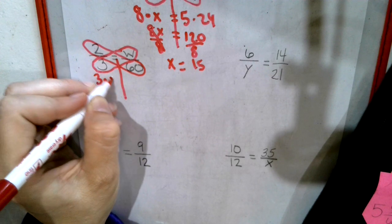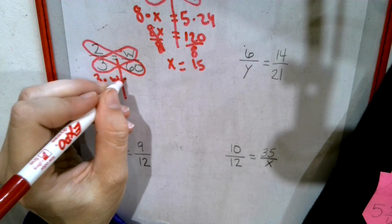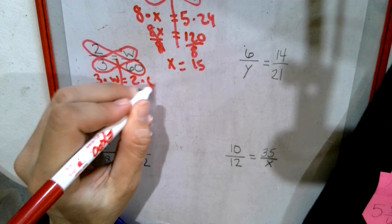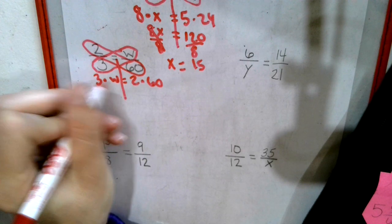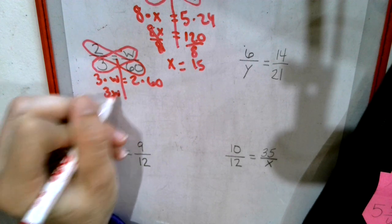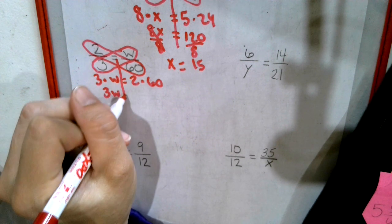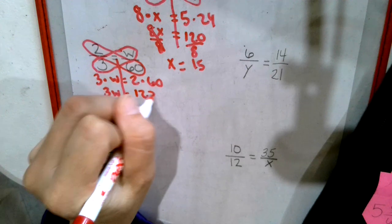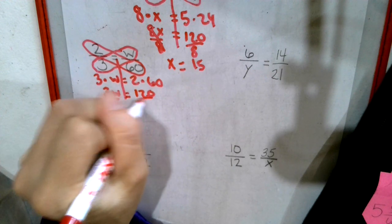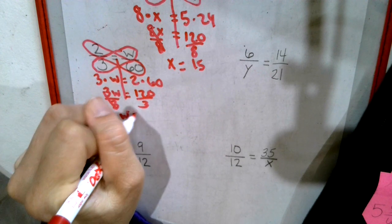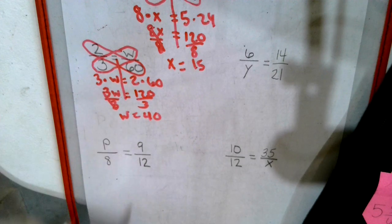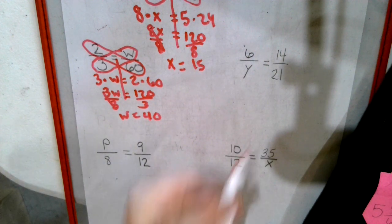We've put down the diagonal, 3 times W equals 2 times 60. Shove them together. Number and letter shoved together. 2 times 60 is 120. Divide by 3. W equals 40.